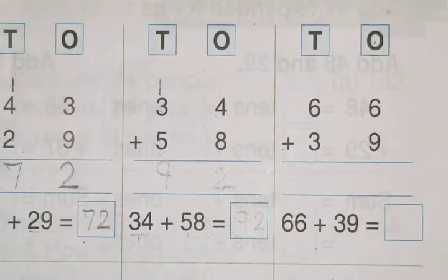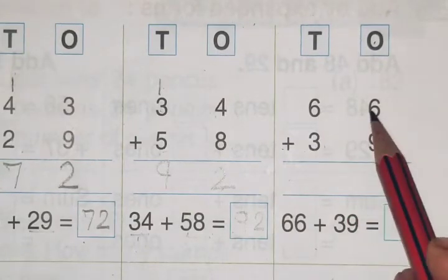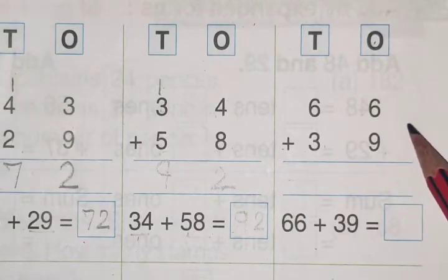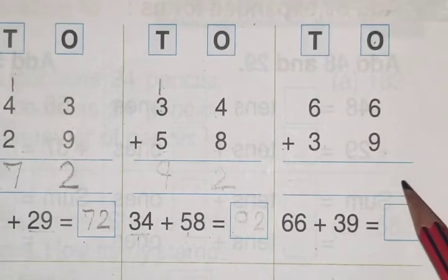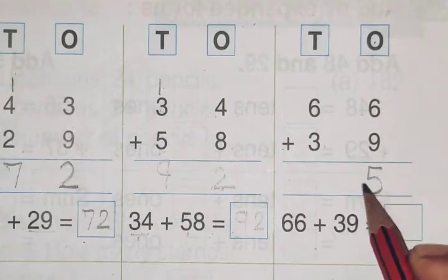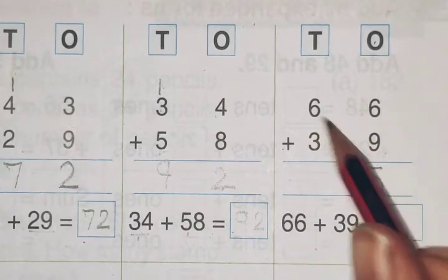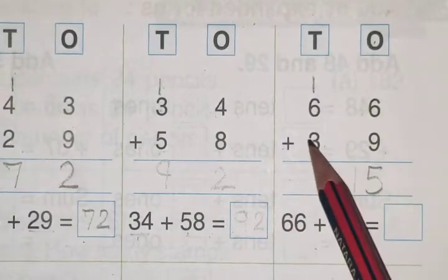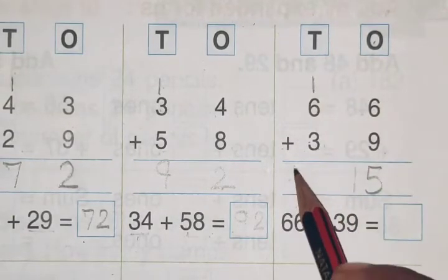This is the next question: 66 plus 39. Now what do we do? We will add 6 plus 9. We will add 15. 5 will come here, and this one will carry here.